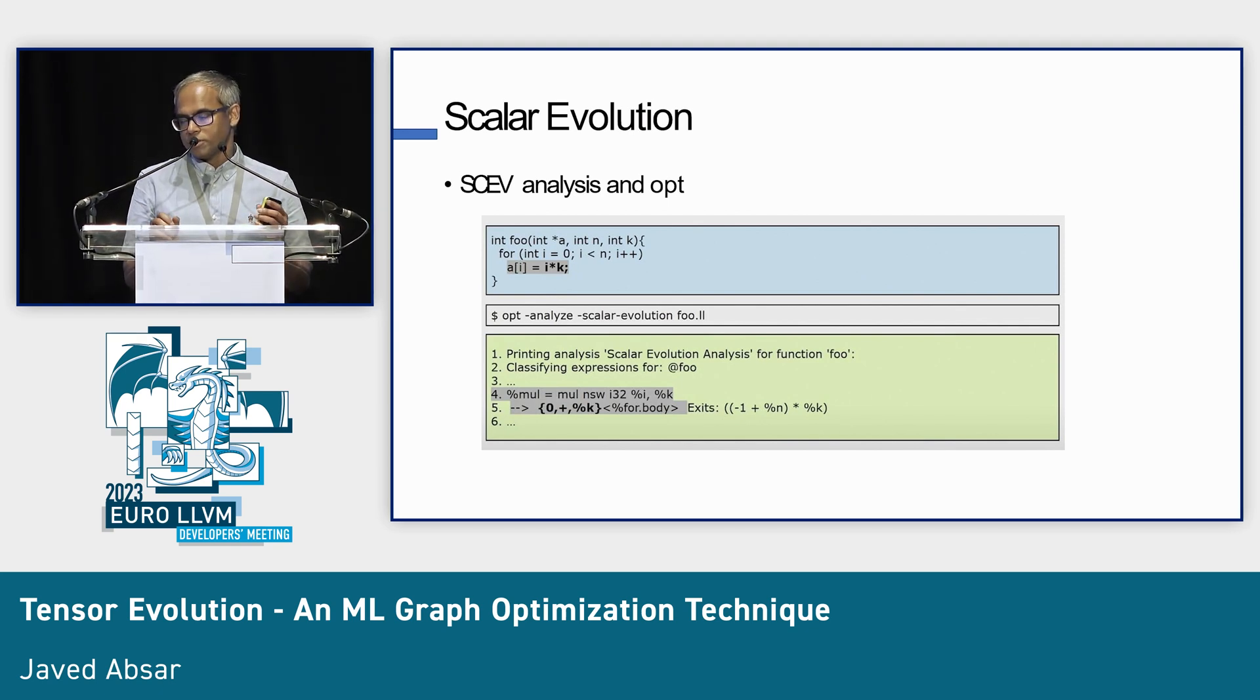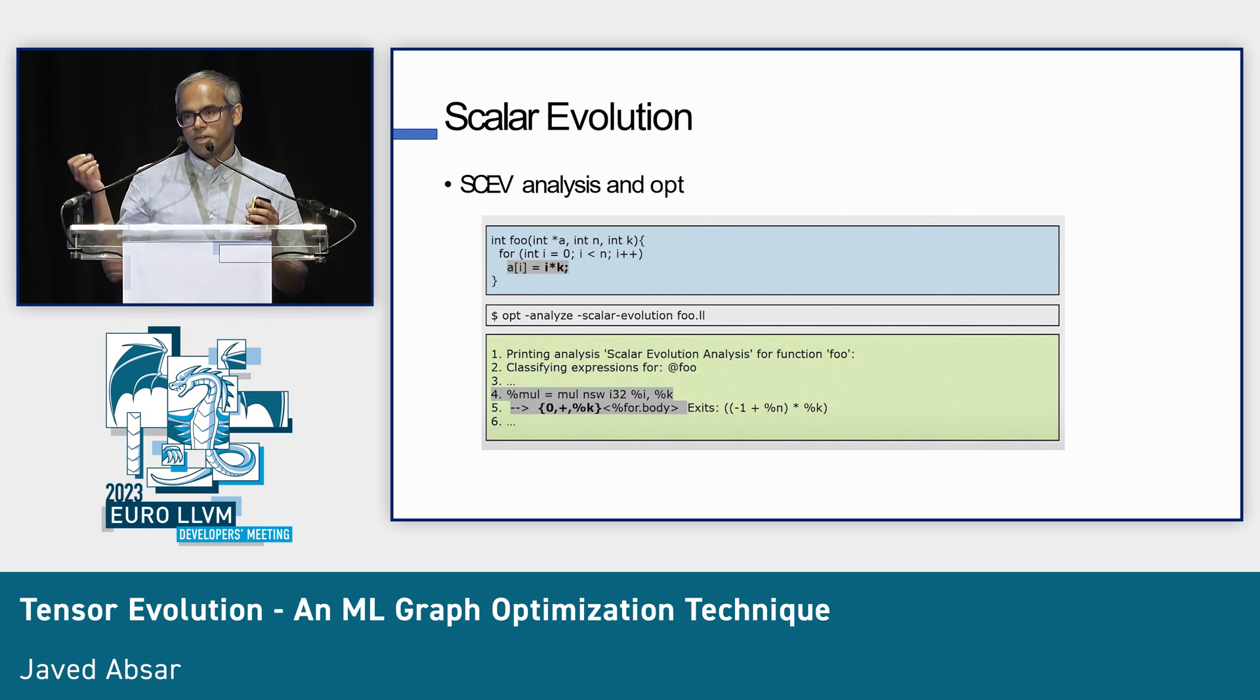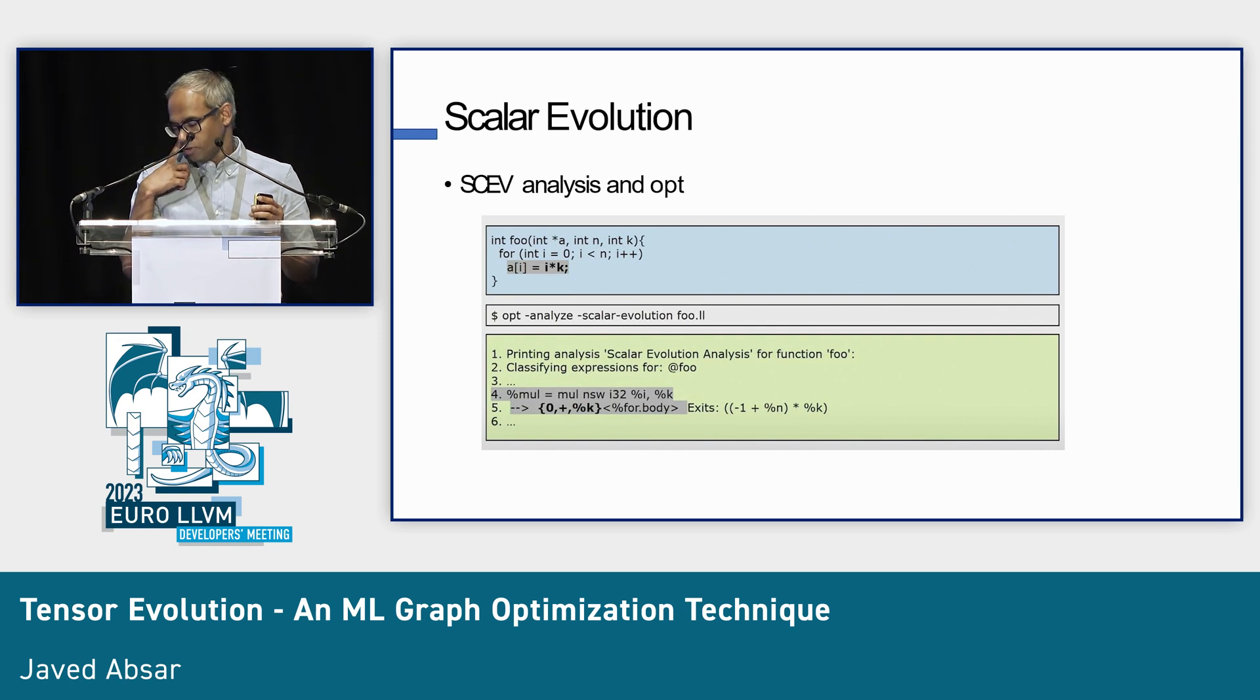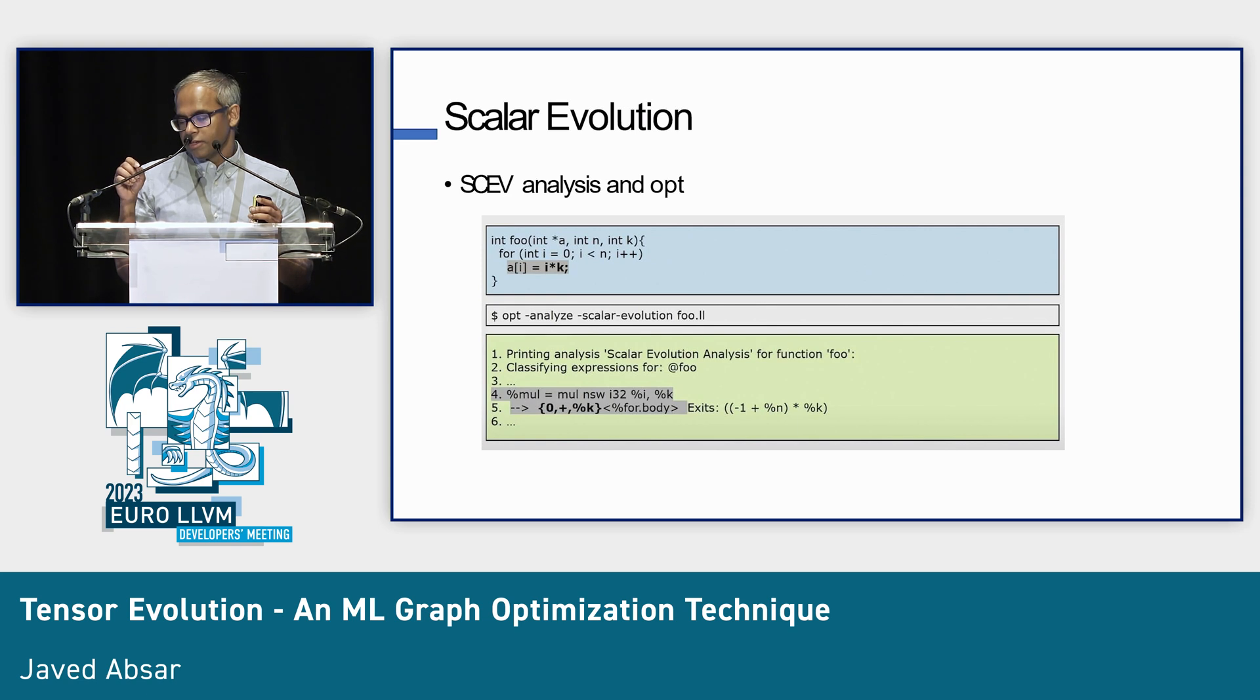So, recap, what is SCEV? If you have a for loop, and in this case a simple one, A[i] equals i times K. You can see what it's doing is putting values 0, K, K plus K, 2K, into the array A. Looking at the code, you can see that. But the SCEV analysis figures that out and builds something called a basic recurrence.